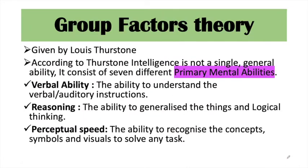Next we discuss group factor theory, given by Lewis Thurston. Thurston said that intelligence is not a single ability. Intelligence consists of seven primary mental abilities, which are present in every individual, but the proportion is different in every individual. The first primary mental ability is verbal ability.